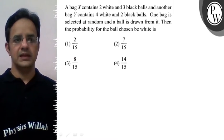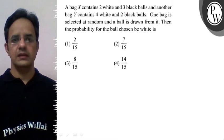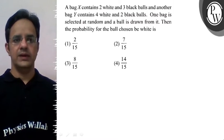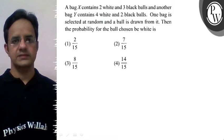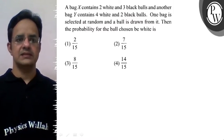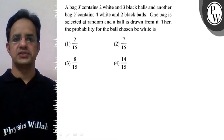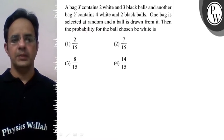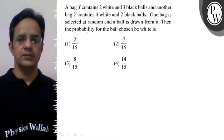Hello Batcho, problem kehta hai bag X contains 2 white and 3 black balls and another bag Y contains 4 white and 2 black balls. One bag is selected at random and a ball is drawn from it. Then the probability for the ball chosen to be white is.